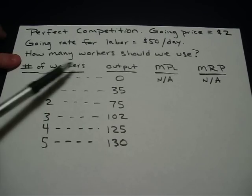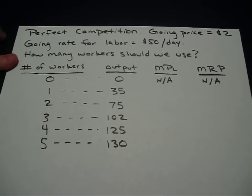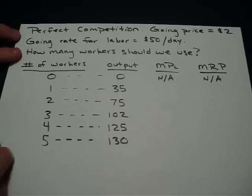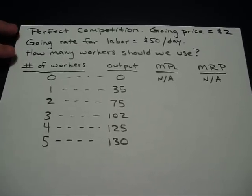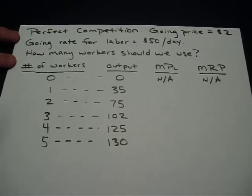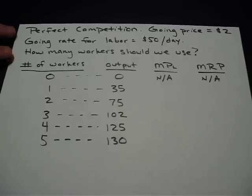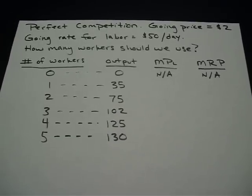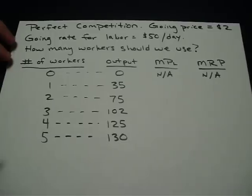You're told the number of workers and what they're producing in terms of output. Zero workers obviously have no output, one worker produces 35, two workers produce 75, on down the line. The first thing we want to calculate is the MPL — marginal product of labor.